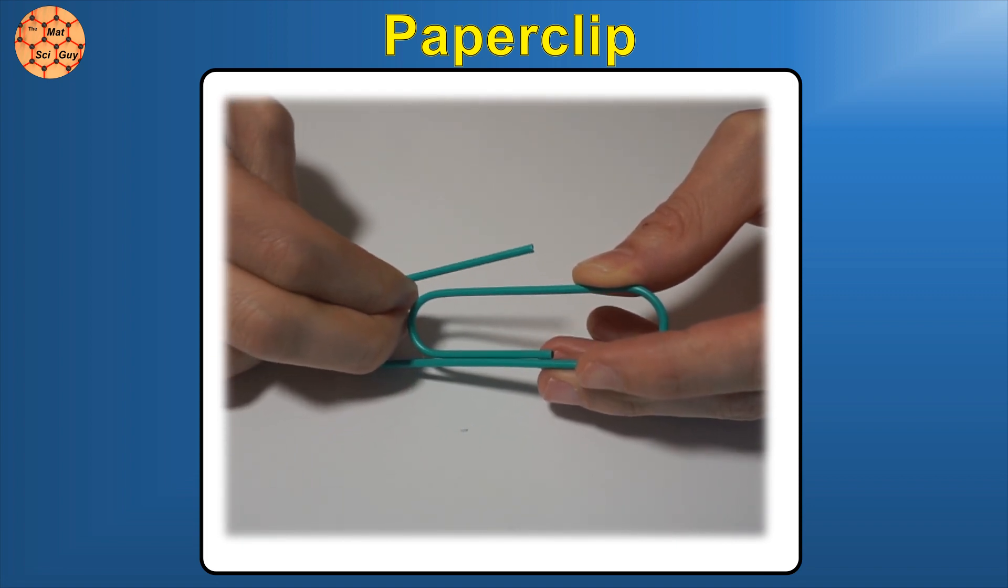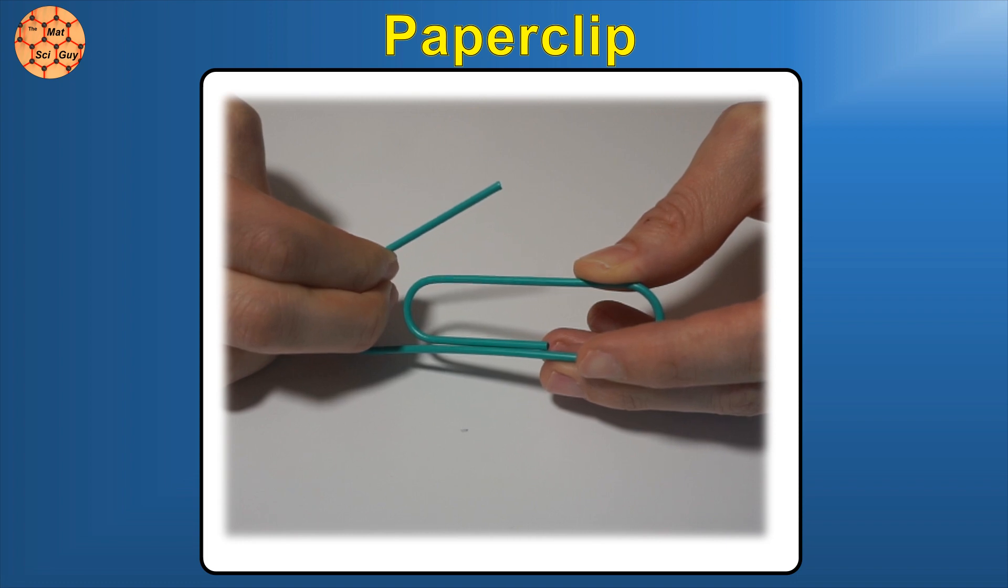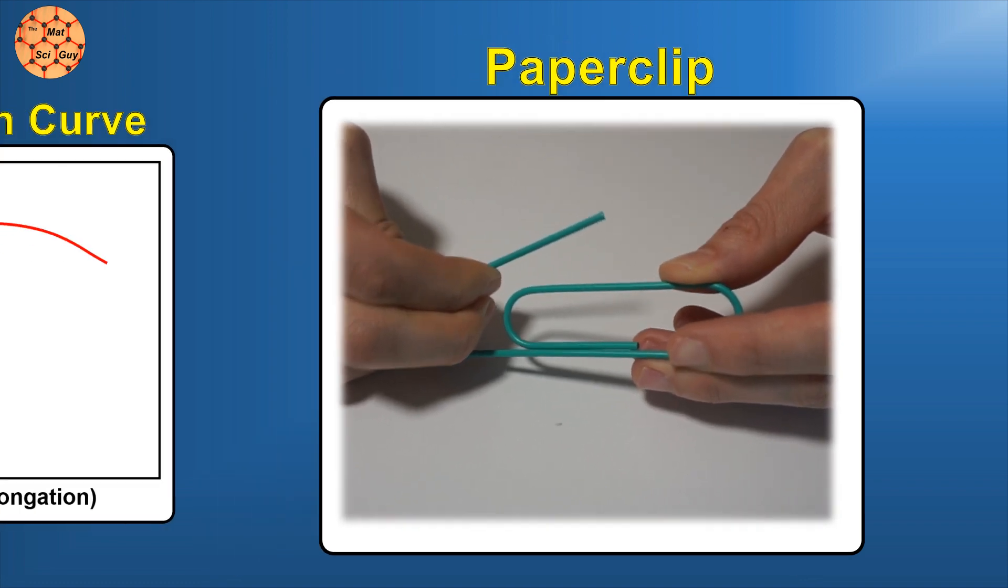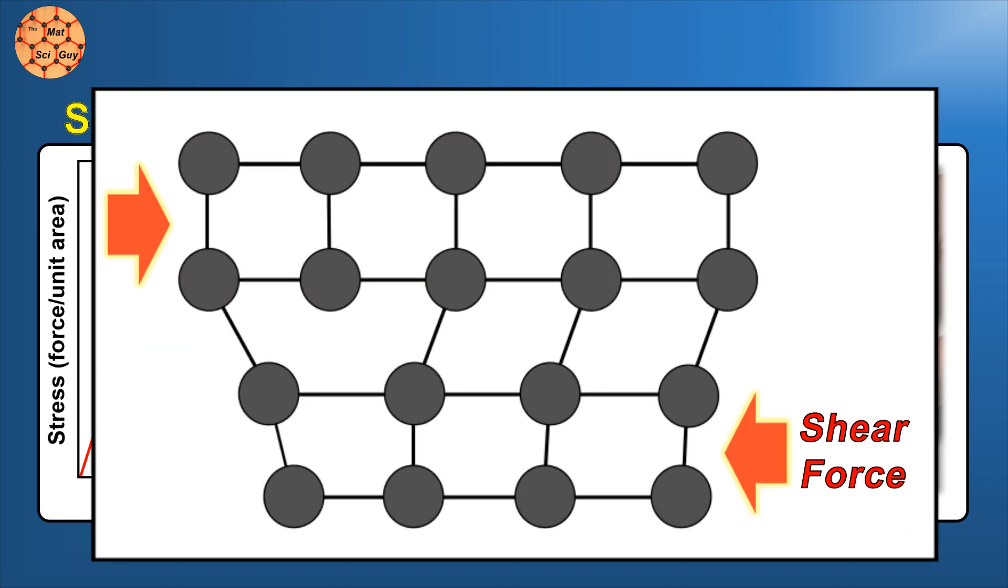If we start to apply more force, we notice that now we're actually bending the paperclip into a new shape. On our graph, we have entered the range of plastic deformation. In metals, plastic deformation occurs through slip, where crystal defects called dislocations move within the structure.